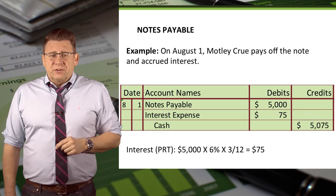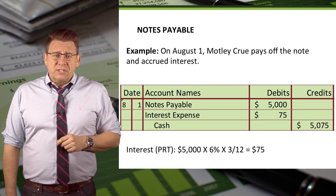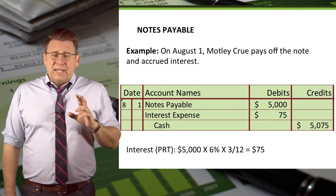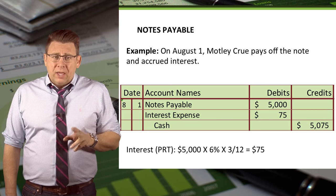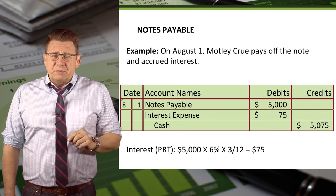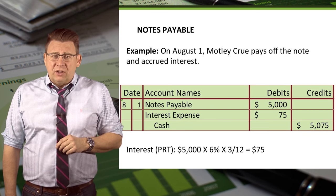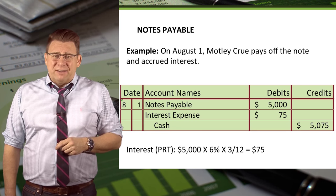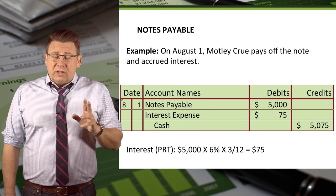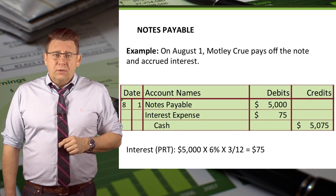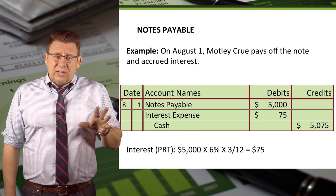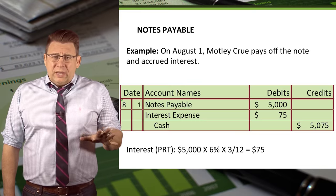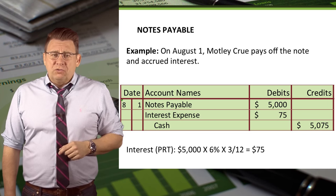Assume on August 1st, Motley Crue pays off the note and accrued interest. The journal entry to record the settlement of the note is a debit to notes payable for $5,000, a debit to interest expense for $75 — that's for three months of interest — and a credit to cash for $5,075. This amount equals the principal plus the interest. You can see the interest calculations on the slide.